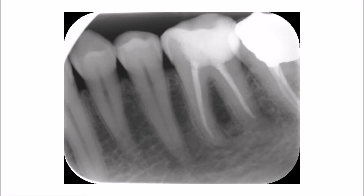Now shift to the distal of the tooth and measure again the distance between the line connecting the two cemento-enamel junctions and the line drawn across the alveolar crest margin. This again should be 1.5 millimeters. In all cases, those two lines should be parallel to each other.